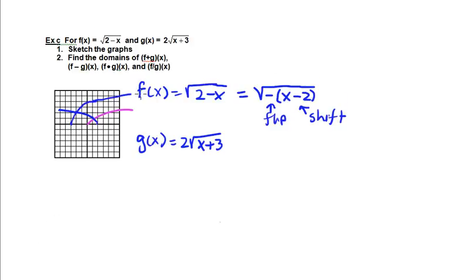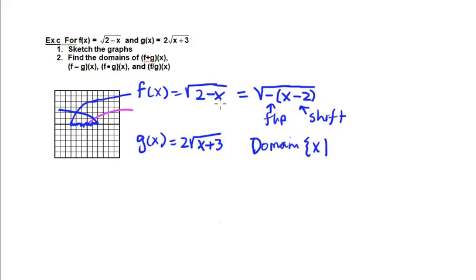The height of the graph isn't so important as the region where both functions are defined. For f, we have values when x is less than positive 2; for g, we have values only when x is greater than negative 3. So the domain — the x values — is the region of overlap between the two functions. Stated explicitly, it's the region where x is between negative 3 and positive 2, with endpoints included because the radical equals 0 at those points, which is still defined.